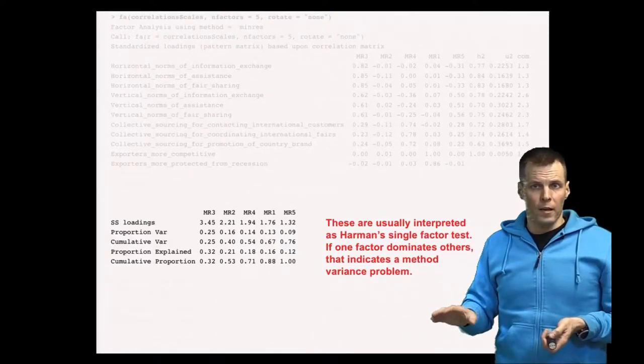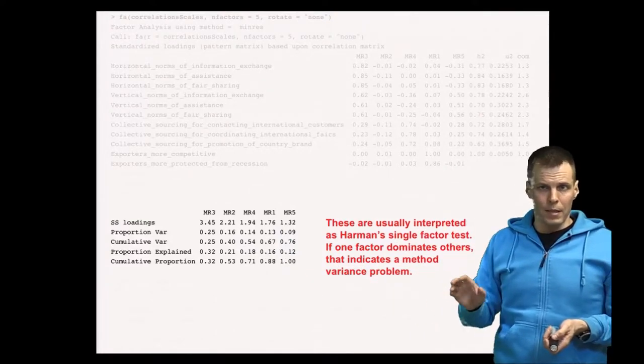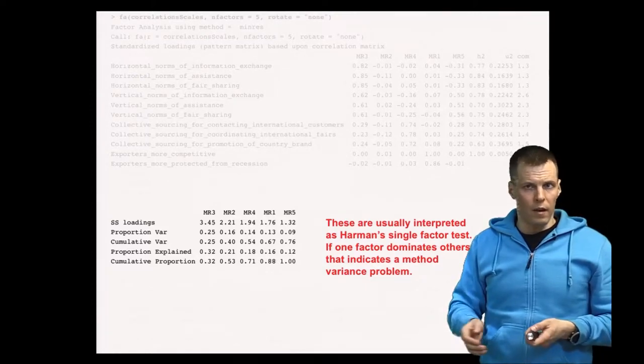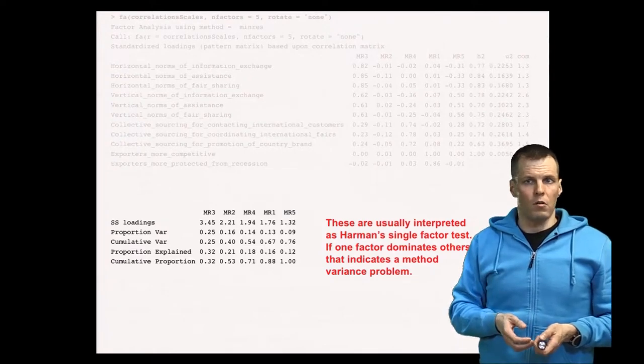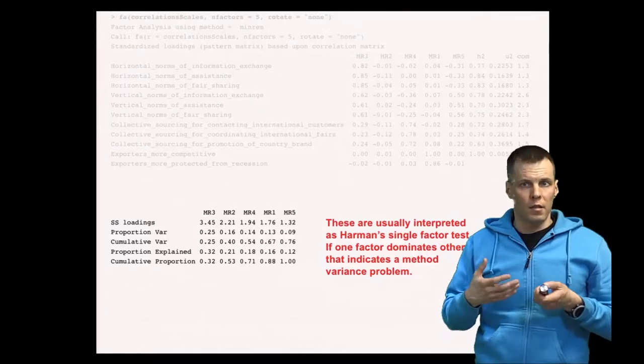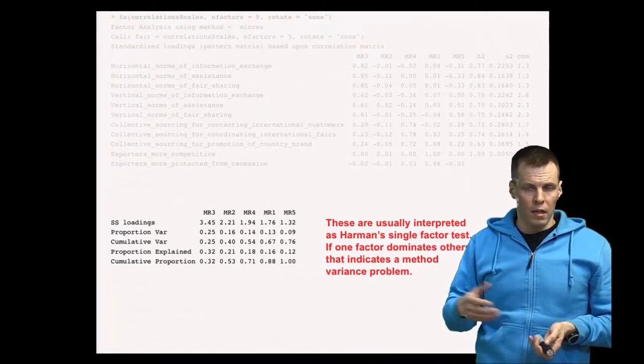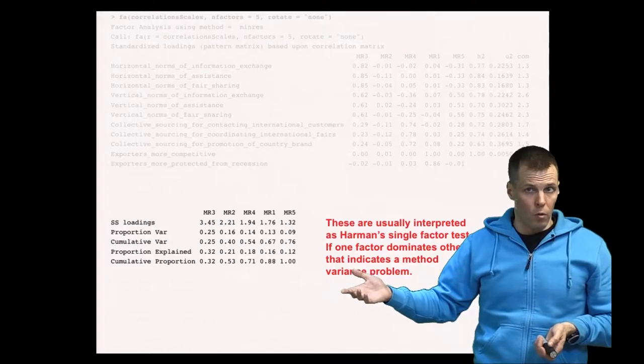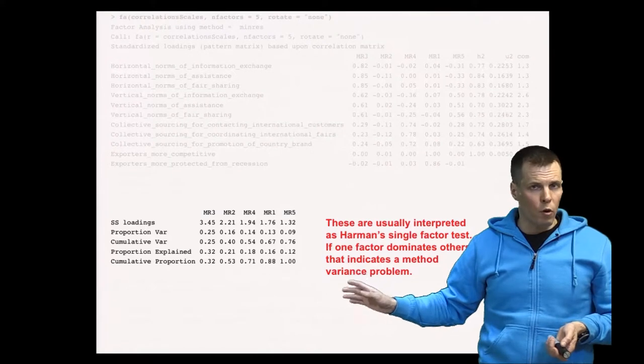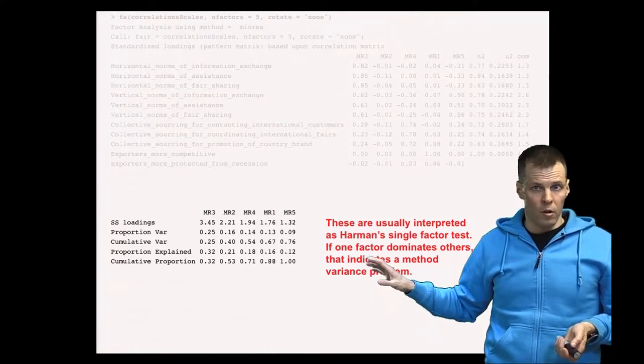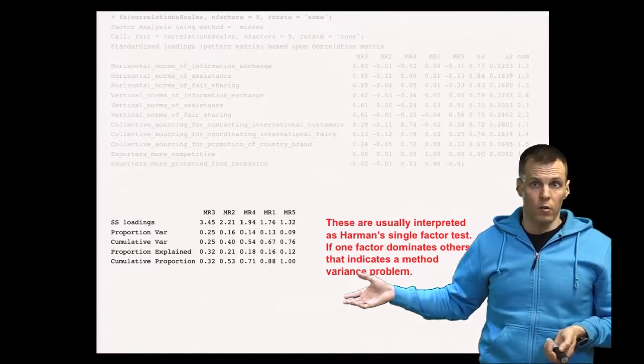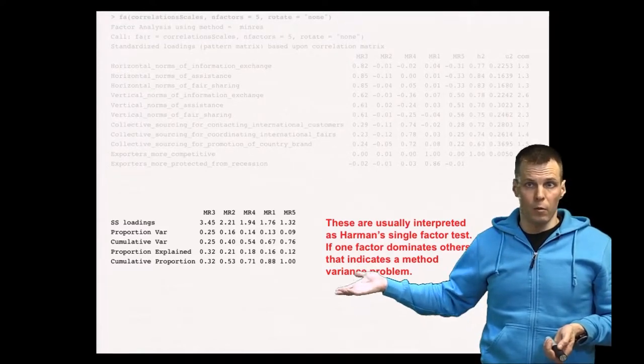The Harman single factor test is a bit misleading in its name because it's not really a statistical test, and it's not even a very good diagnostic because it will probably detect only very severe method variance problems. Nevertheless, it's something that you can easily check from the results of an exploratory factor analysis. If you want to do more rigorous tests of method variance, then you can apply confirmatory factor analysis based techniques that allow you much more degrees of freedom on what you can do.